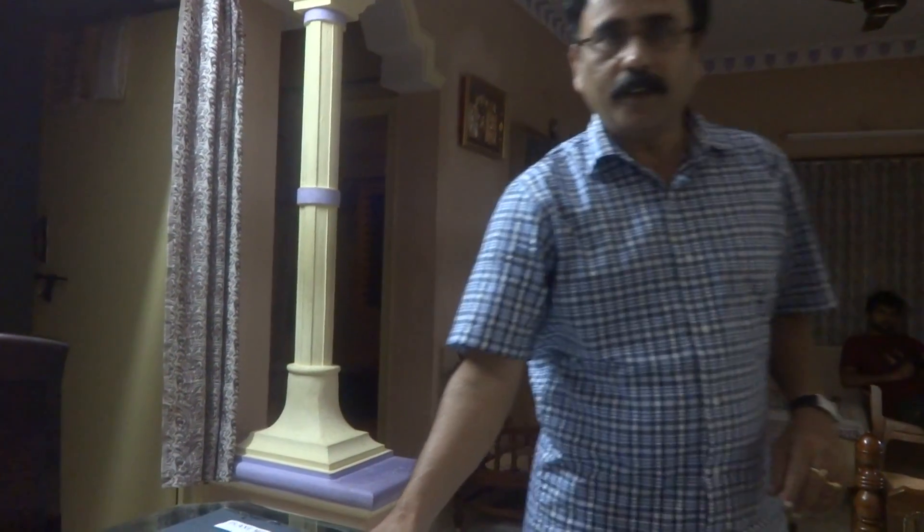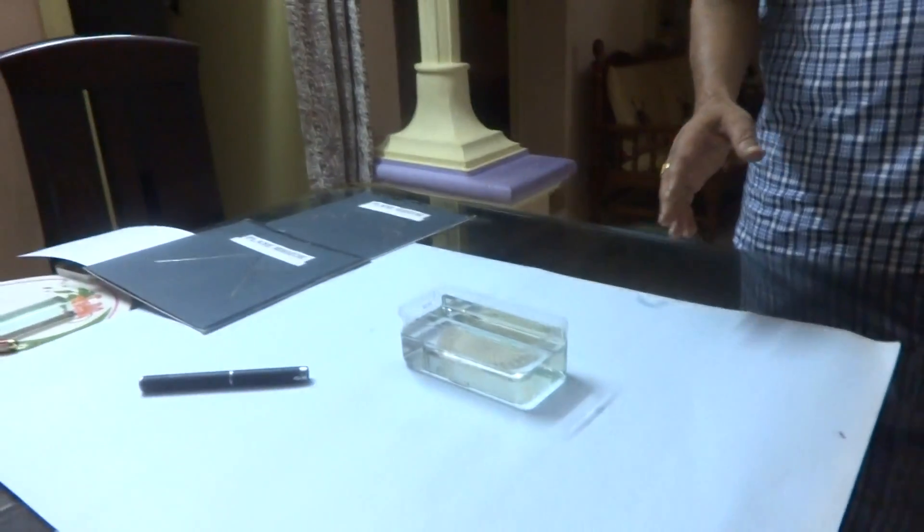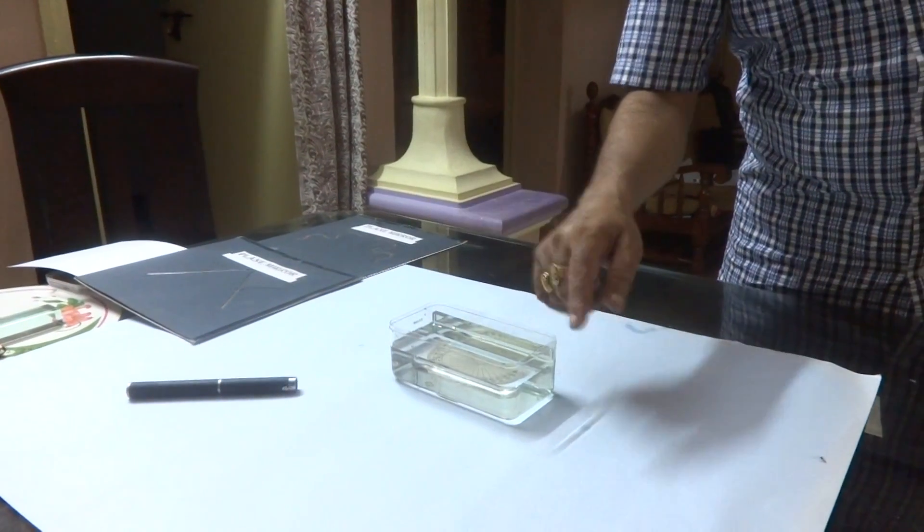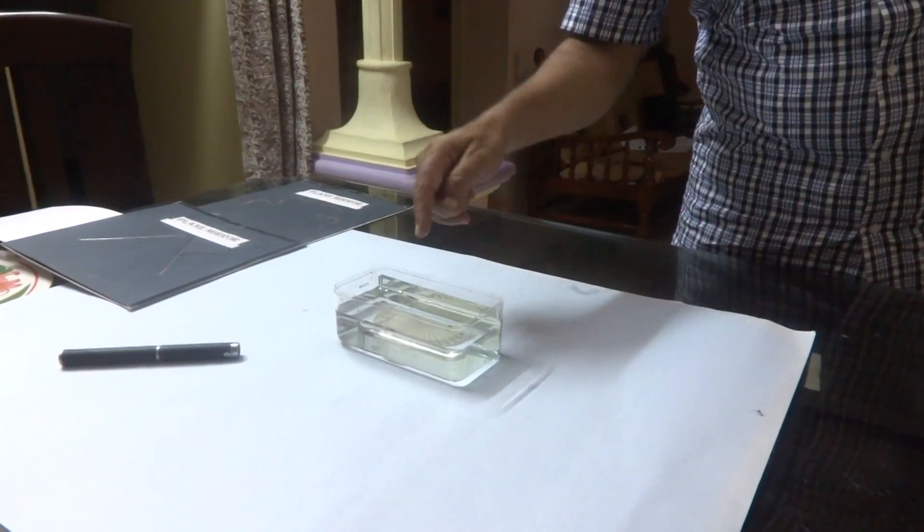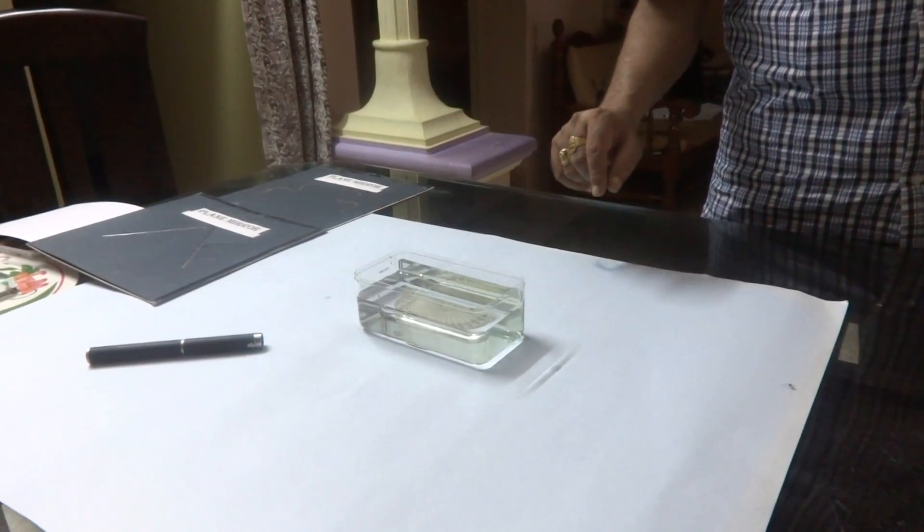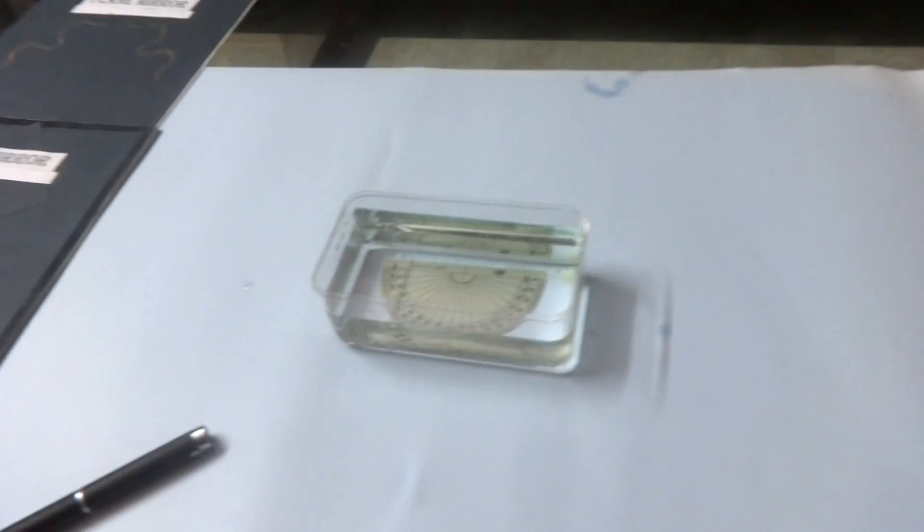This is a simple setup. We can see a plastic box filled with water and a protractor is placed under it. This is a mirror. Now, let us verify the laws of reflection through a plane mirror.